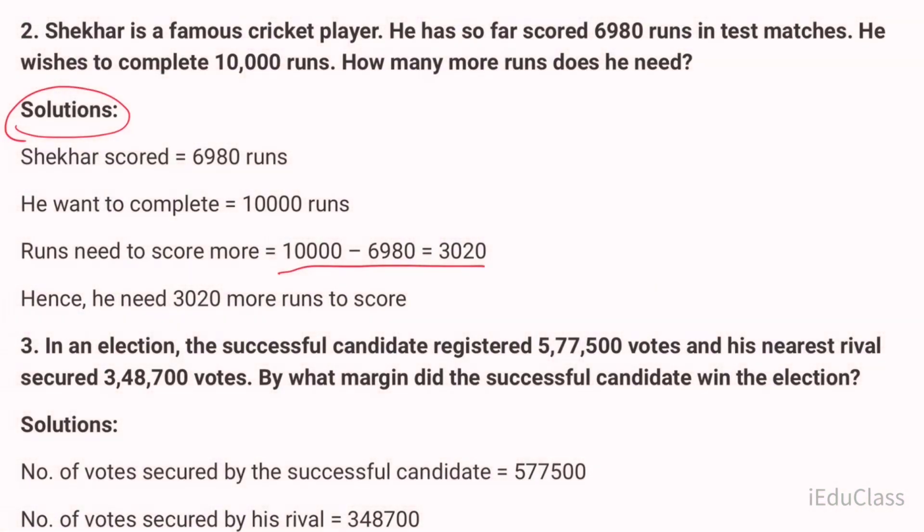Solution: The cricketer scored 6980 runs. He wants to complete 10,000 runs. So 10,000 minus 6980 equals 3020. Shaker needs 3020 runs to score 10,000 runs.